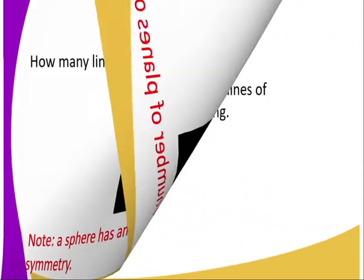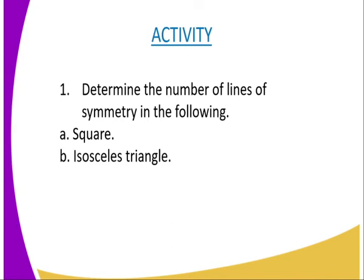We have come to the end of today's lesson, and I'm going to give you the following assignment. Question number one, determine the number of lines of symmetry in the following: A, square, and B, isosceles triangle.